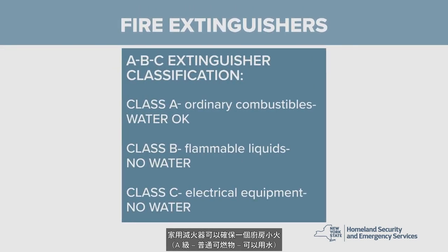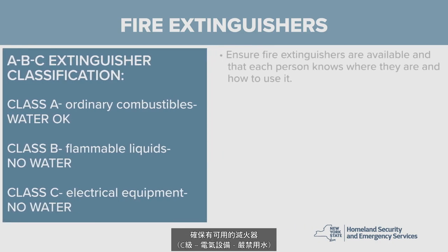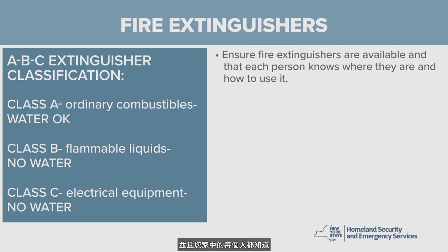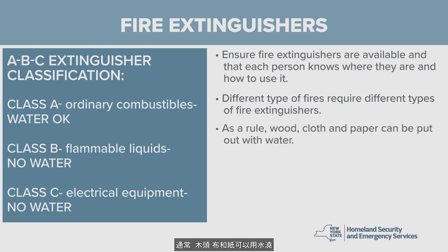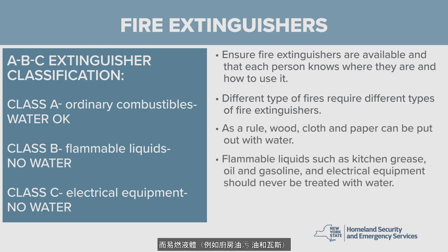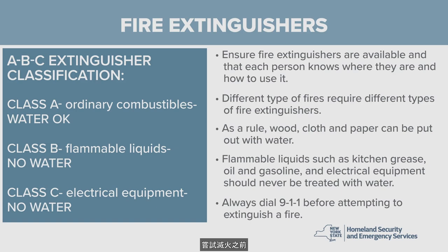Home fire extinguishers can ensure a small kitchen fire does not spread and burn down your home or the neighborhood. Ensure fire extinguishers are available and that each person in your home knows where they are located and how to use them. As a rule, wood, cloth, and paper can be put out with water, while flammable liquids such as kitchen grease, oil, and gasoline, and electrical equipment such as appliances and televisions, should never be treated with water. Always dial 911 before attempting to extinguish a fire. Never put your personal safety on the line when trying to put out flames.